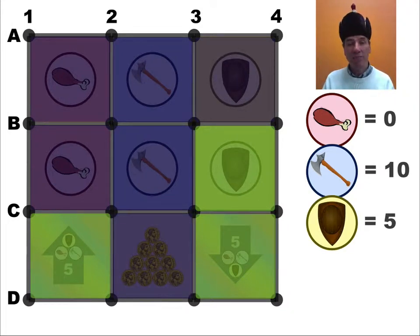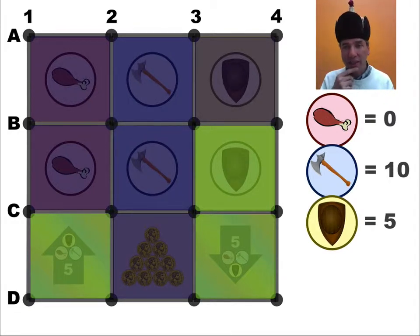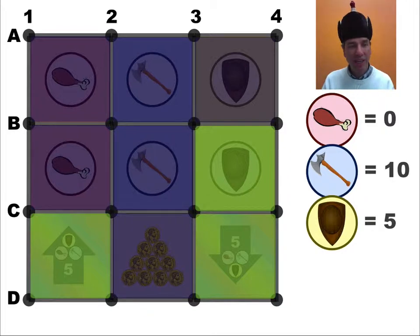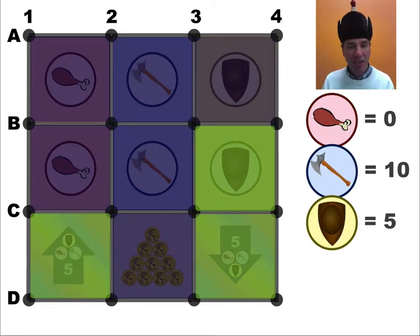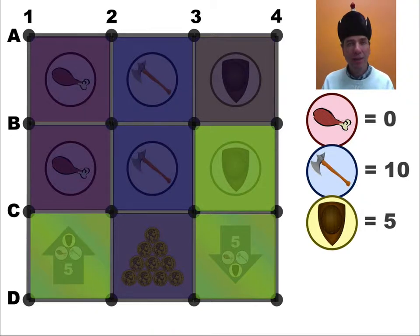What is the score? The shield for both of us is worth five — so I get five, they get five. The axes: they've got both axes, so they get 20 points for that, plus another 10 points for the 10 doubloons at the bottom. So they end up with 35 and I end up with five. This is a time for pretending like I'm a sore loser. Enjoy the game.